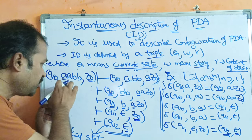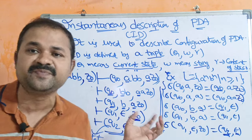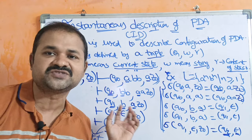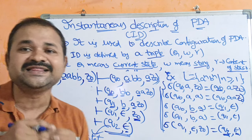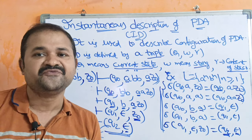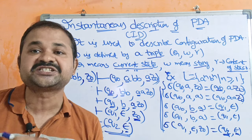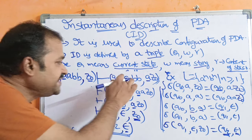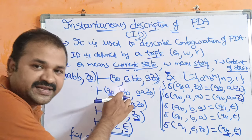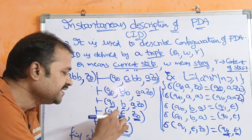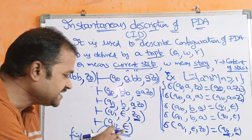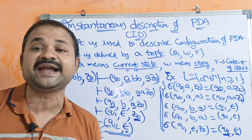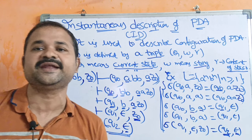So we can say that our input string AABB is accepted by the pushdown automata, because we reached the final state. In this way we can define the instantaneous description at any given moment — each triple (state, remaining input, stack content) represents the ID at that moment. This is about the instantaneous description of the PDA.